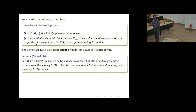We basically need to check that the dual fine Selmer is torsion as a Λ(H) module, whenever we can already show it is finitely generated Λ(H). We will be considering those H which are isomorphic to Z_P. In that case, Λ(H) is a power series ring in one variable, which is much simpler.